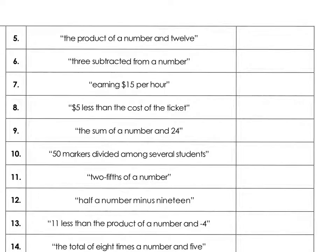The product of a number and 12. So a number and 12 with a product, that's multiplication of a number and 12, so 12 times x, or 12x.